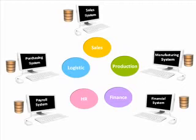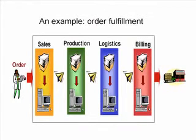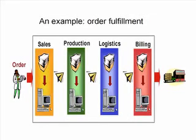So far, that seems a pretty brilliant solution. But take a customer order — also known as the order-to-fulfill process, for example — and apply the standalone computer system solution. As we see in this figure, the order begins a mostly paper-based journey from in-basket to in-basket around the company. Often, data is created and re-entered many times into different departments' computer systems.